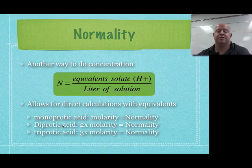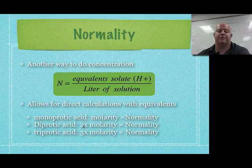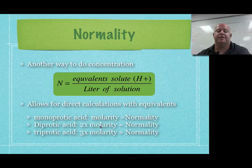For a diprotic acid such as sulfuric acid, H₂SO₄, two times your molarity gives you your normality. So if you had 2 molar sulfuric acid, you'd have 4 normal sulfuric acid. If you have a triprotic acid — the best example being phosphoric acid, H₃PO₄ — if you had 2 molar phosphoric acid, you'd have 6 normal phosphoric acid. It's just another way of representing concentration, and in normality it really focuses on those H+ ions regardless of which acid you have.